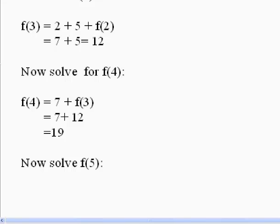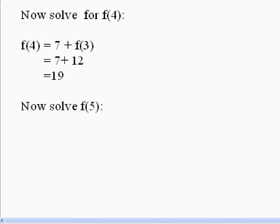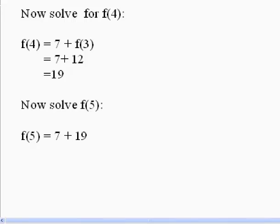Now that we know what f(4) is, we can solve for f(5). Since f(5) = 7 + f(4), and f(4) = 19, f(5) = 7 + 19, which equals 26.